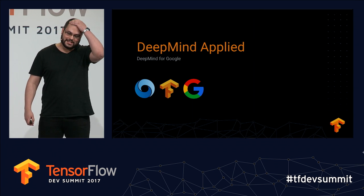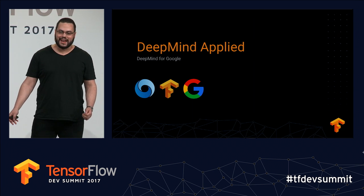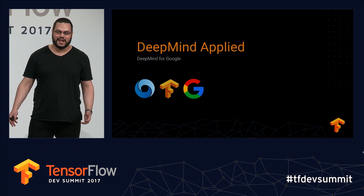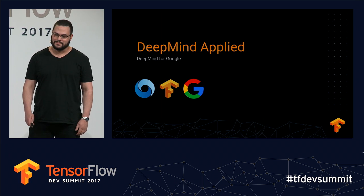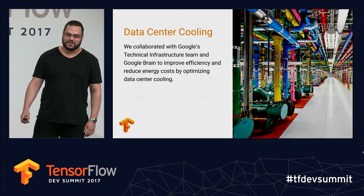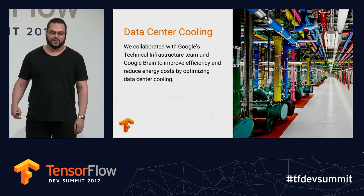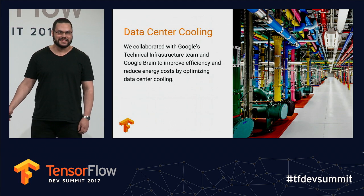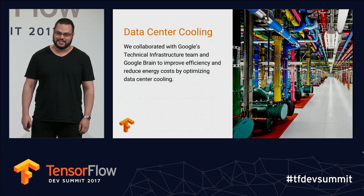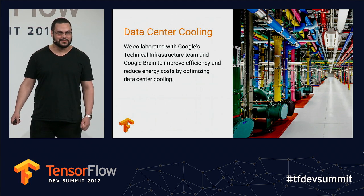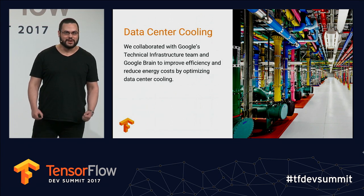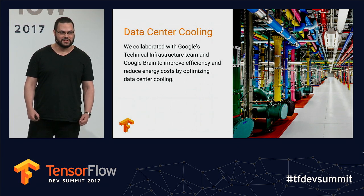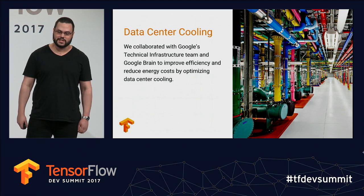I'm going to spend the rest of my time talking more specifically about how we use TensorFlow and how it helps us. Since I'm from the Applied Group, I'll start there. One of the coolest things we've done recently is optimising the energy usage in Google's data centres. This began when the technical infrastructure team came to us after seeing the AlphaGo matches and wondered how we could use RL to control the data centres more efficiently.